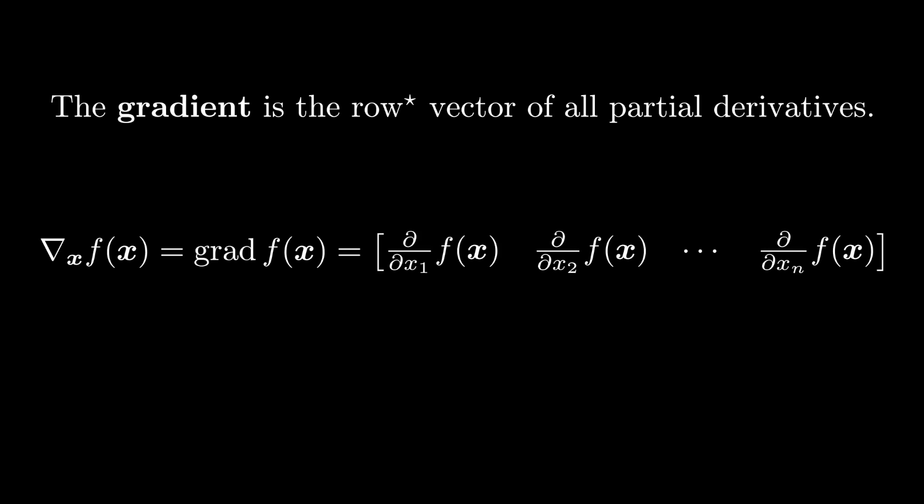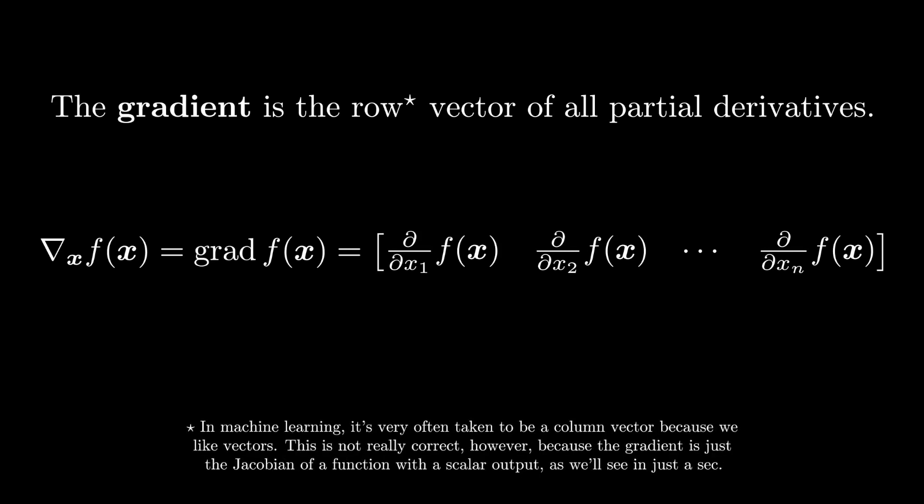Now a quick warning. Very often in machine learning textbooks and machine learning papers, you will see the gradient referred to as a column vector. In machine learning, most of the time we like our vectors to be columns. But technically speaking, the gradient is a special case of the Jacobian matrix, and it's a row vector.